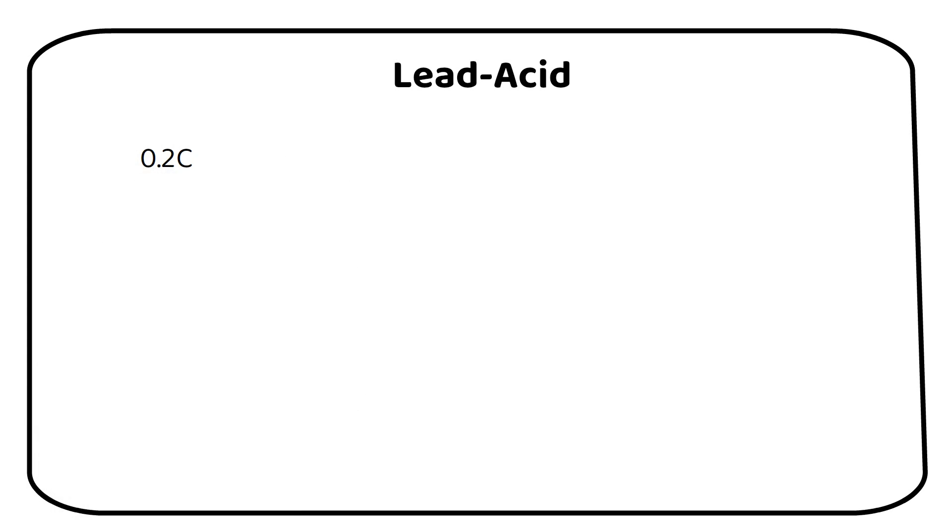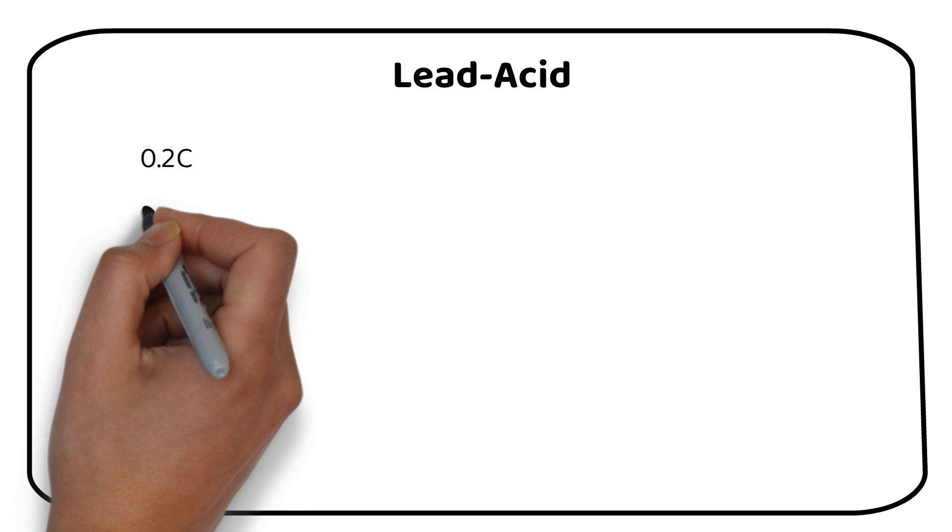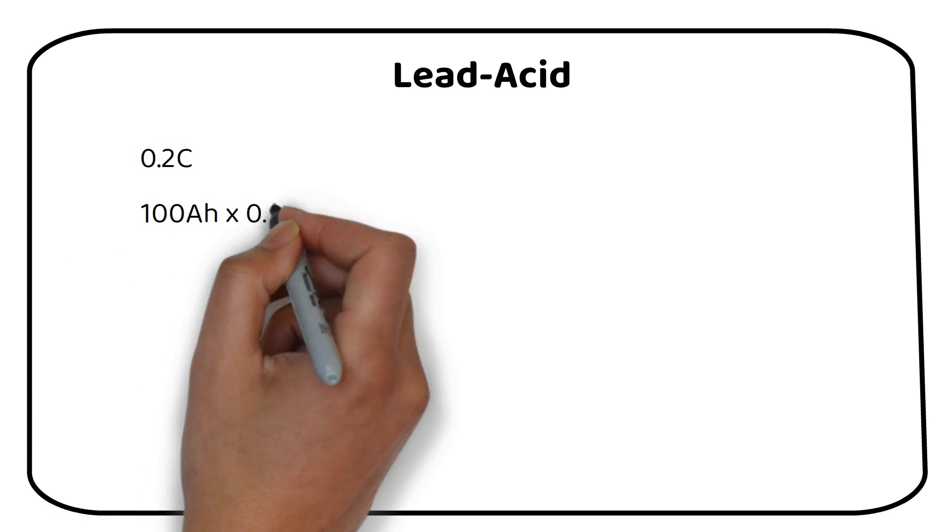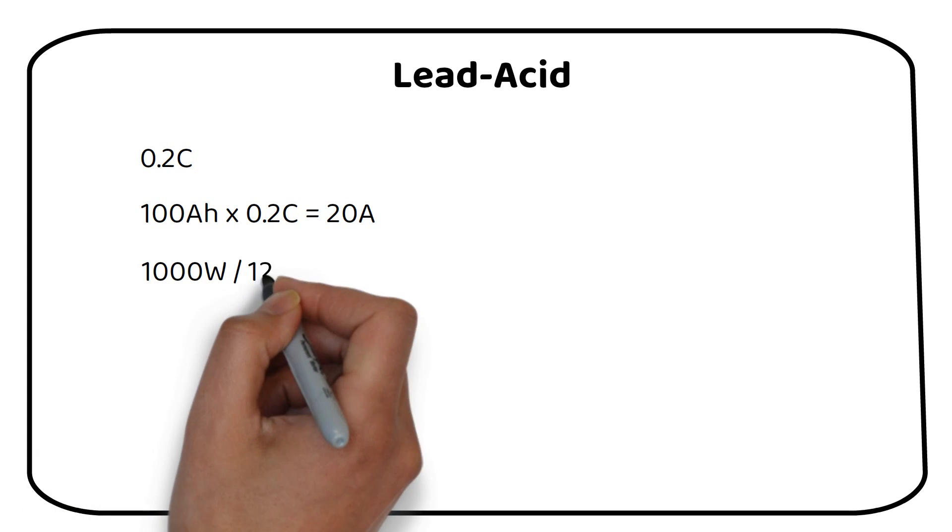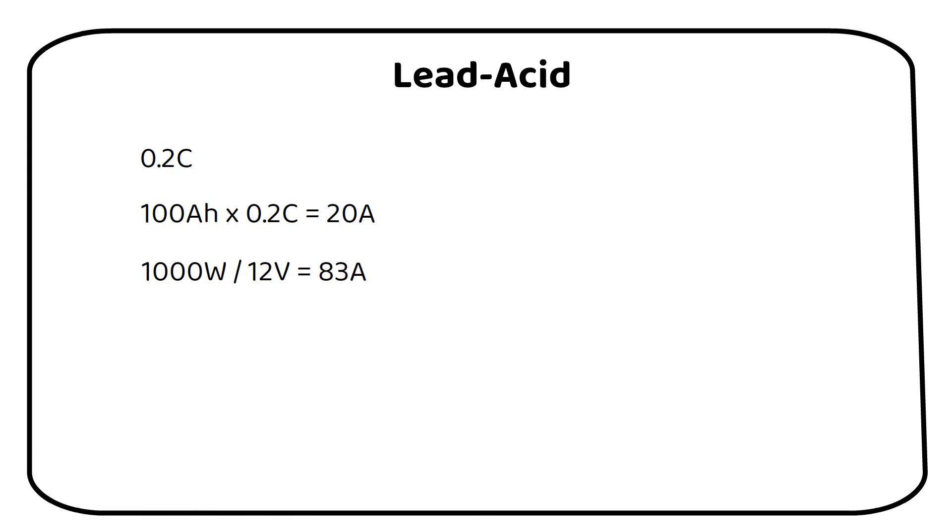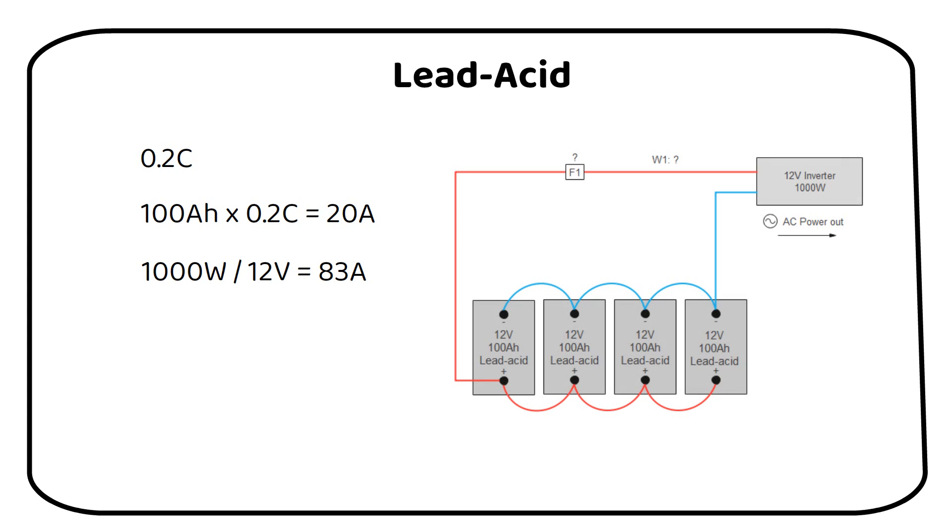The C rate of lead acid battery is 0.2C. This means that the 12 volt 100 amp hour lead acid battery is best to be discharged with a maximum of 20 amps. From our previous calculation we saw that the inverter can draw a maximum of 83 amps. We need 4 batteries in parallel if we want to respect the C rate of the battery.